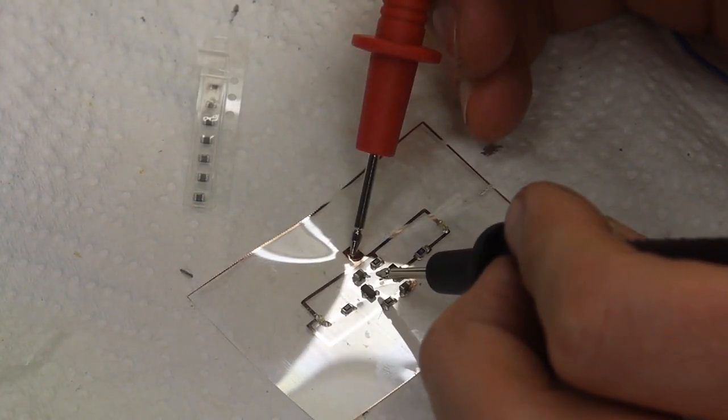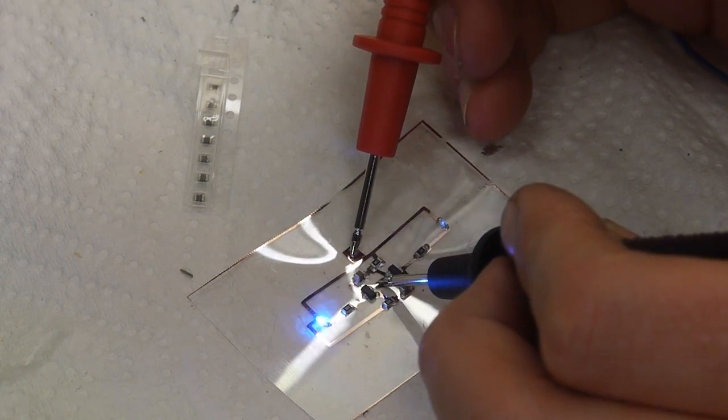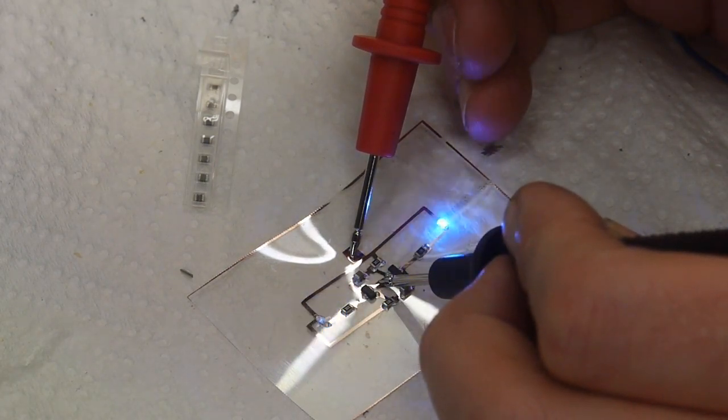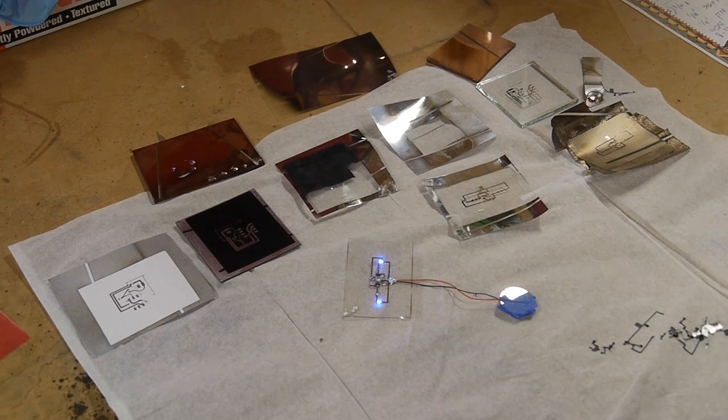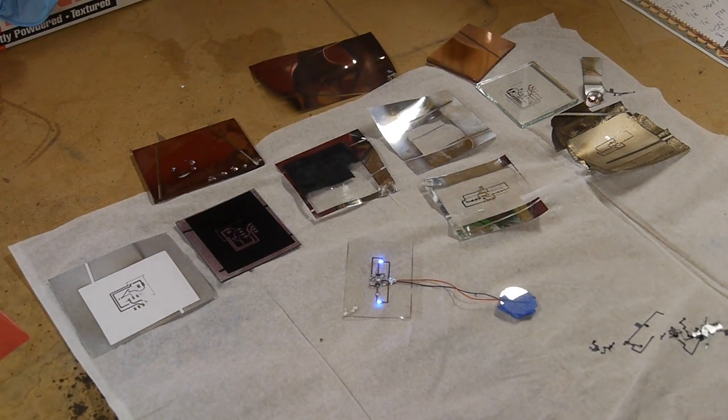You might be thinking well this isn't actually all that great because commercially we can do this on Kapton and it's even able to be reflowed and it's thinner and the copper layer is thicker and it can be chemically etched and all that.